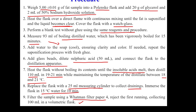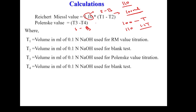In the filtration step, the first running is rejected and only 100 ml is collected in the flask. The reason for rejecting the first running is to equilibrate the volumetric flask, funnel, and Whatman number 4 filter paper with the environment, so there is no error in the determination. The RM value formula is: 1.1 × (T1 − T2), and the Polenske value is (T3 − T4), where blank values are subtracted from sample values.